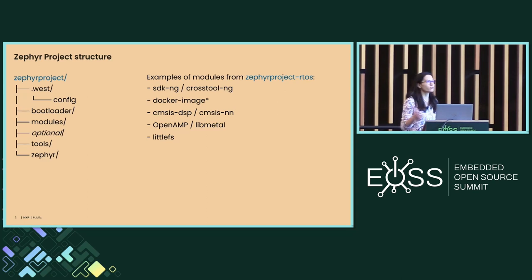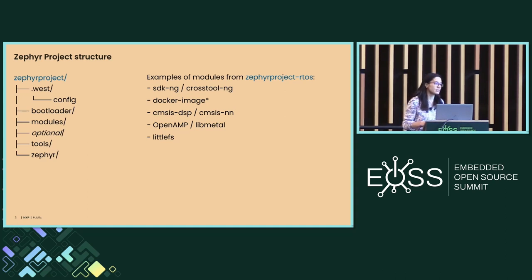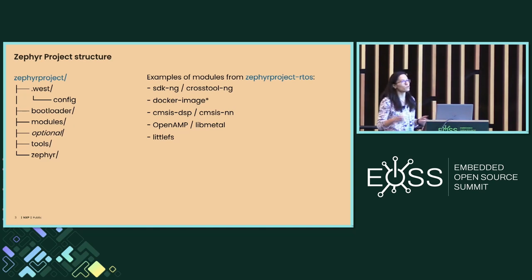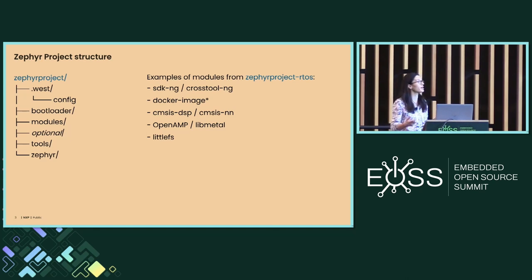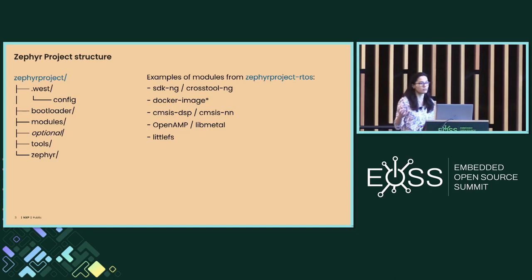There are also tools for testing. Some module examples in the Zephyr project repository include the SDK-NG with the Zephyr SDK containing the toolchain and development tools. The Crosstool-NG is used to build toolchains. Docker image provides Docker images for Zephyr development and testing. CMSIS-NN is an optimized library for computation and neural networks. OpenAMP and libmetal are examples for interprocess communication. LittleFS is a fail-safe file system designed for MCUs.